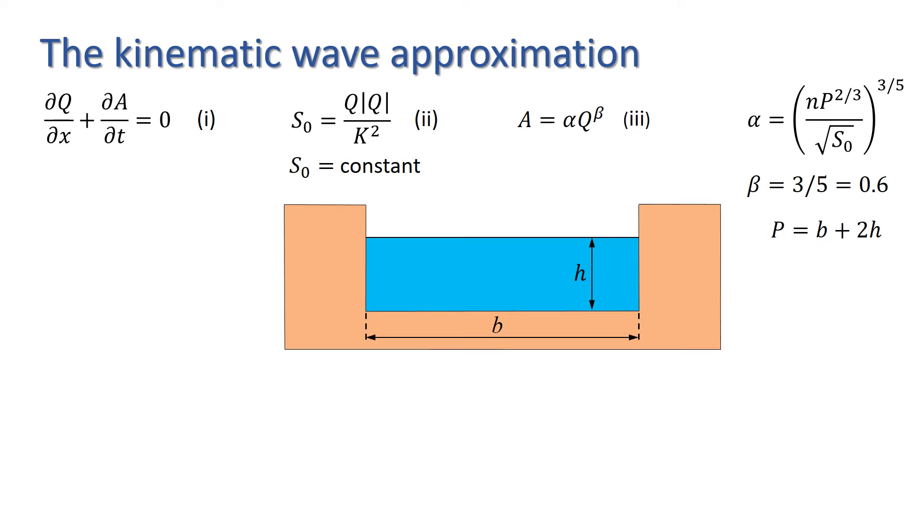For simplicity, we'll make a further assumption. Since the channel is wide, the width b is much greater than the depth h, and we can take the wetted perimeter to be simply the width of the channel, i.e. P is approximately equal to b.